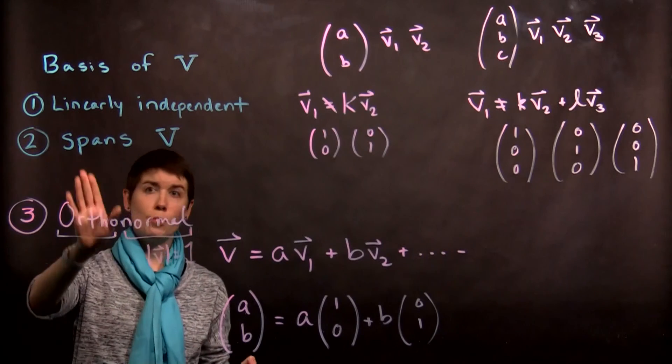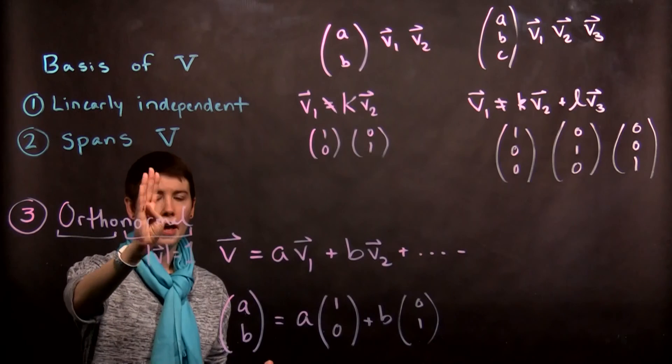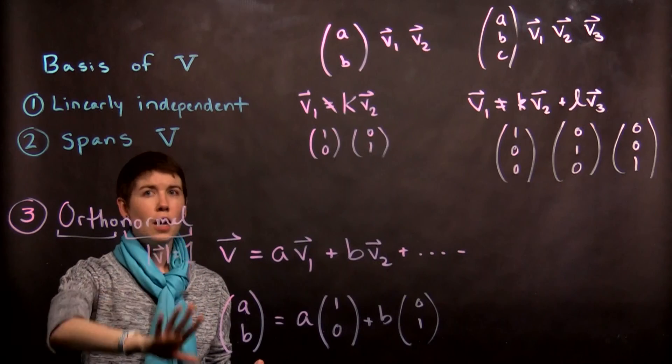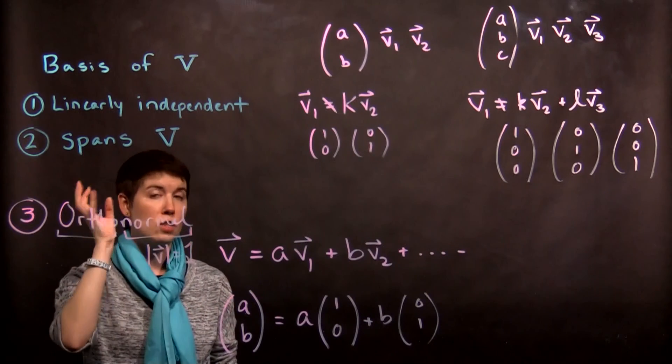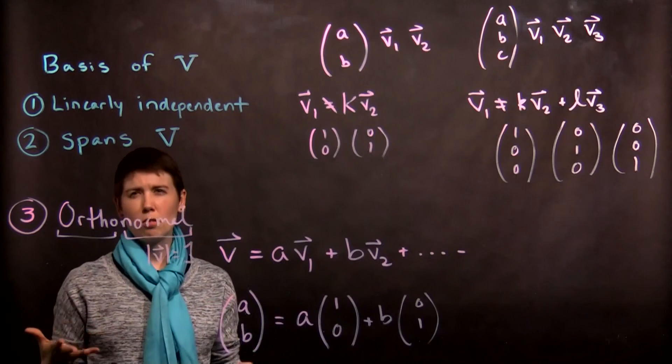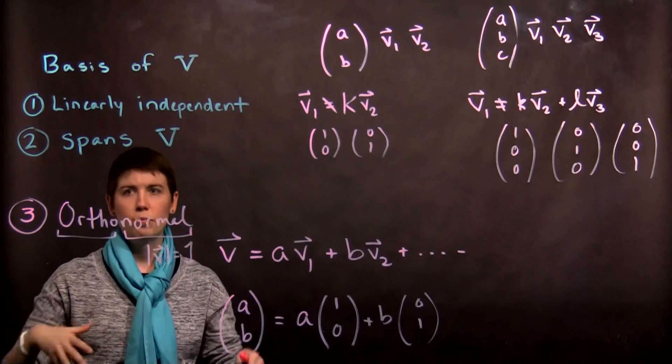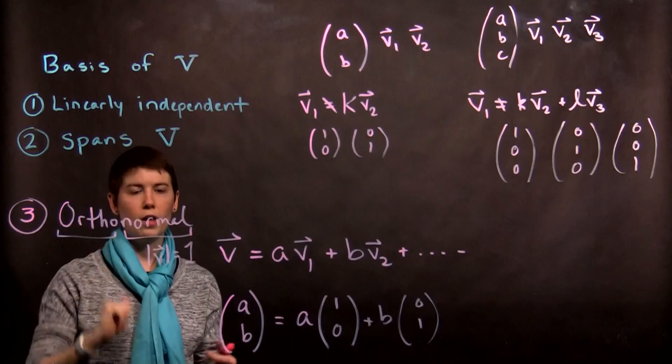So we want them to be perpendicular to one another and have a length of 1. And this is again going to be a good choice for the physics. And in general mathematically it doesn't have to be true, but our good choices of basis will have this be true.